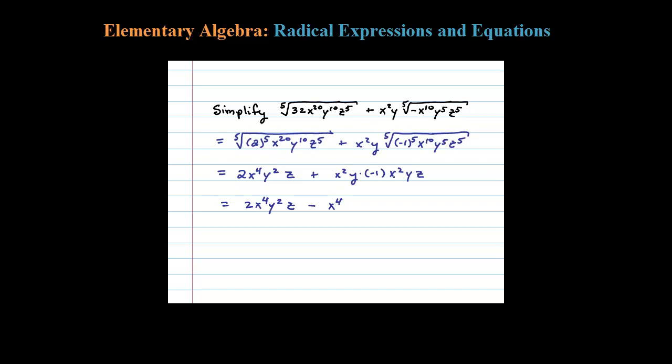That's X times X - when you multiply like that, you add exponents. Then Y times Y is Y squared, and then Z. Now look at this - magically these two terms become like terms. See how the variable part is exactly the same?